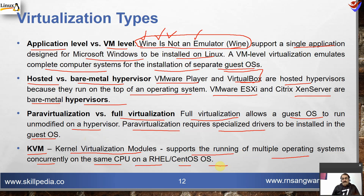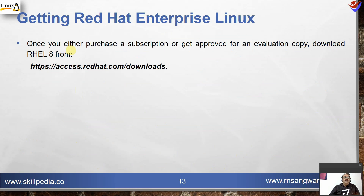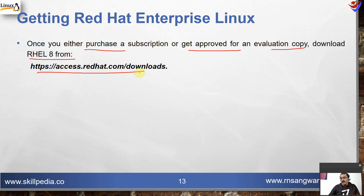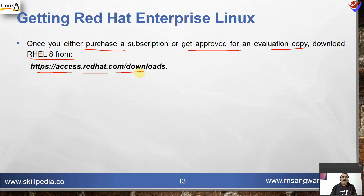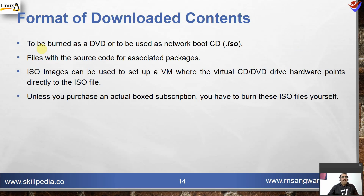Getting Red Hat Enterprise Linux: once you purchase a subscription or get approved for an evaluation copy, download RHEL8 from the Red Hat URL. We have already done that and have the DVD nearly installed — I demonstrated this in the previous session. For this you need an account on redhat.com with a corporate or private email ID, not a public email ID. If you need a private email ID, you can get in touch with me — we are a hosting service provider in Delhi and can provide an email ID at a nominal cost.